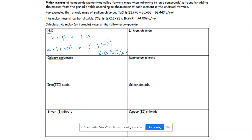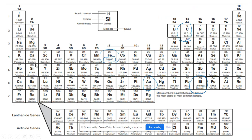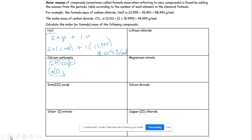Calcium carbonate is a little more difficult because we have to write the formula first. Calcium has a charge of plus two; carbonate is a polyatomic ion, CO₃ with a charge of minus two. Those charges balance, so the formula is CaCO₃. We add one calcium (40.078), one carbon (12.011), and three oxygens (15.999): 40.078 + 12.011 + 3 × 15.999 = 100.086 grams per mole.